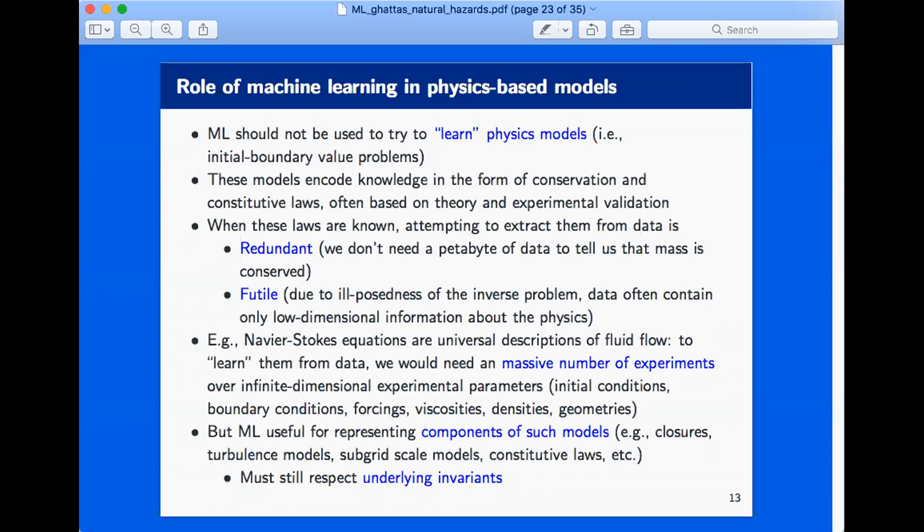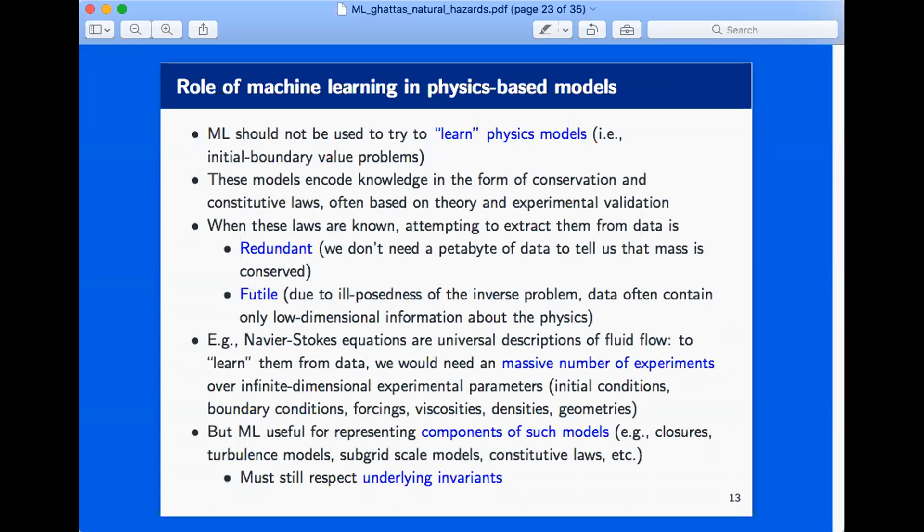So, for example, the Navier-Stokes equations are universal descriptions of fluid flow. And if you actually wanted to learn the Navier-Stokes equations from experiments, you'd have to do an infinite number of experiments because you'd have to parameterize these equations over all initial conditions, boundary conditions, geometry, forcing, and so on.